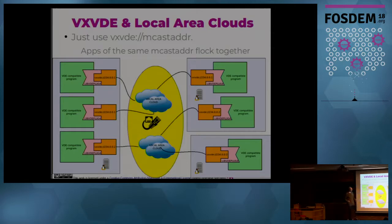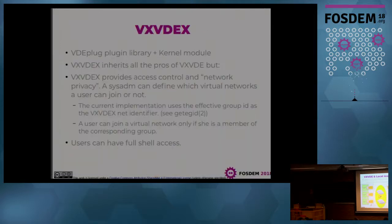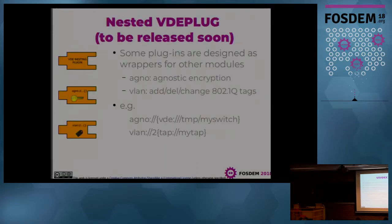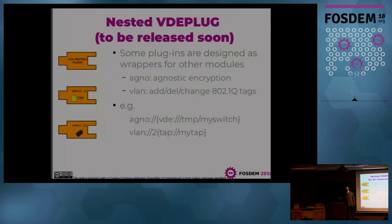That's history — I've spent 10 minutes of my 30 minutes on history. Moving on: we have VXVD with access control, and we have designed a nested plug where you can insert further plugs, for example encryption plugs. So you can use the whole infrastructure, decide whether to use VXVD or slirp or whatever, and add cryptography. You can also play with virtual lines.